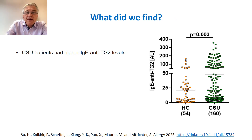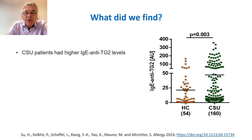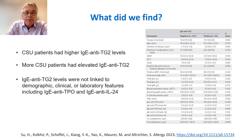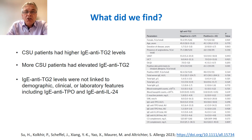Now, what do we find? You can see clearly that the chronic spontaneous urticaria patients have higher IgE anti-TG2 levels, and there are some patients with very high levels. You can also see that more CSU patients than healthy controls have IgE to TG2. However, we did not find a correlation of these IgE anti-TG2 levels with clinical markers or laboratory markers, including other auto-anti-IgE antibodies.